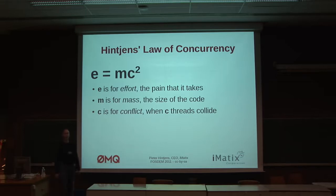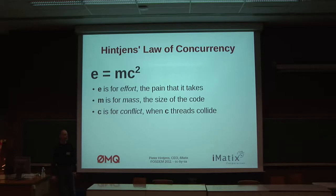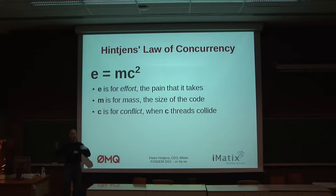So, a law about concurrency. I invented this a couple of weeks ago — it's very original. E equals MC squared: the effort it takes to build a system is a function of the mass — the size of the system — times the square of the number of conflicts between parts of the system.